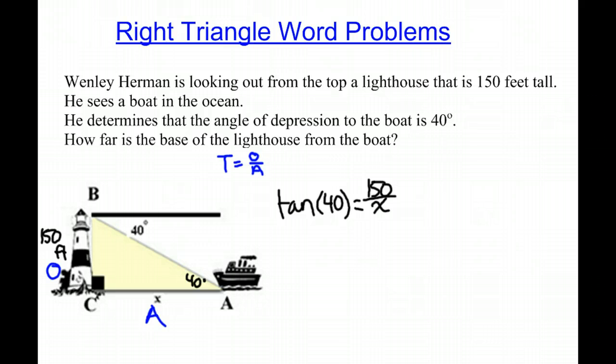Now x by itself, we have to multiply both sides by x. So we have x tangent of 40 will equal 150. Then we actually want to divide by tangent of 40 on both sides.